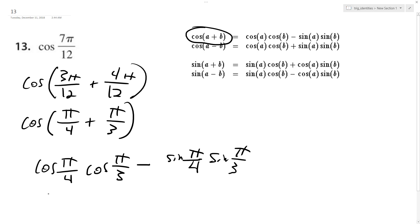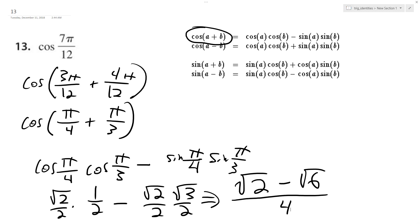So we end up with square root of 2 over 2, 1 half, minus root 2 over 2, and then sine of π over 3 is root 3 over 2. So we end up with root 2 over 4 minus root 6 over 4, and we can combine them because they have a common denominator.